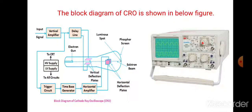The second part is the delay line. How it will be functioning? The delay line provides some amount of delay to the signal which is obtained at the output of the vertical amplifier. This is the second part of the block diagram.